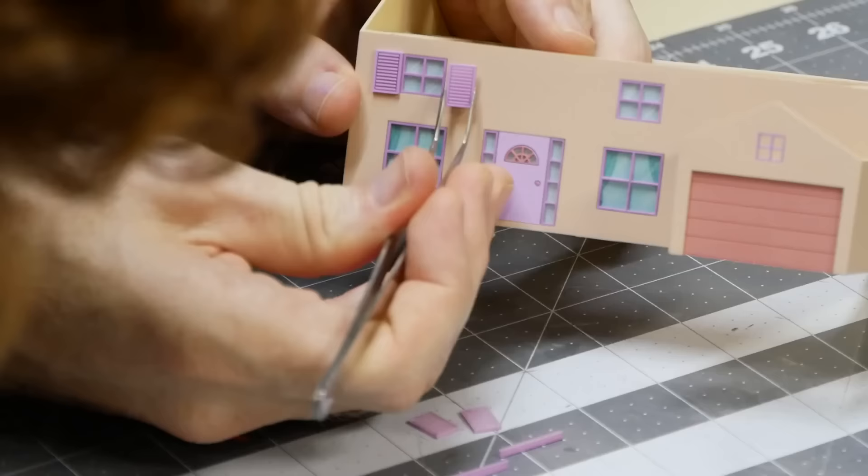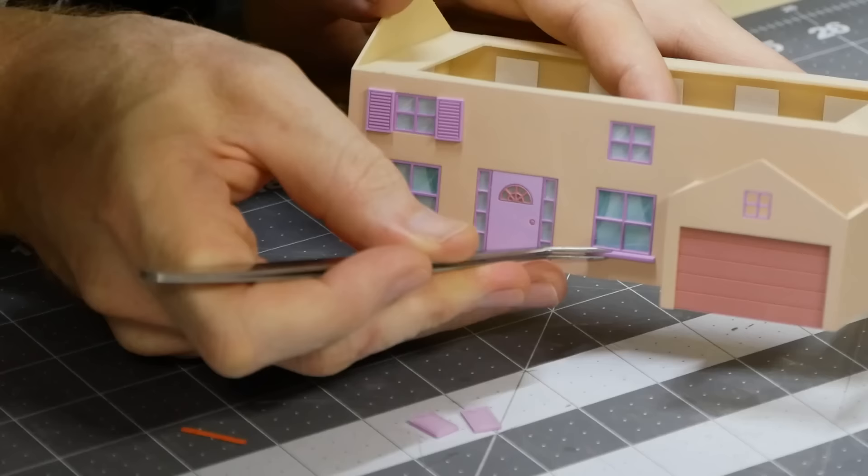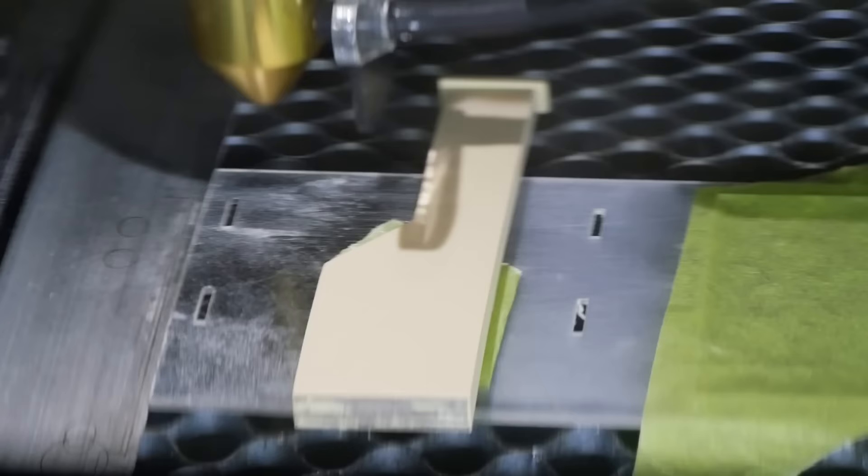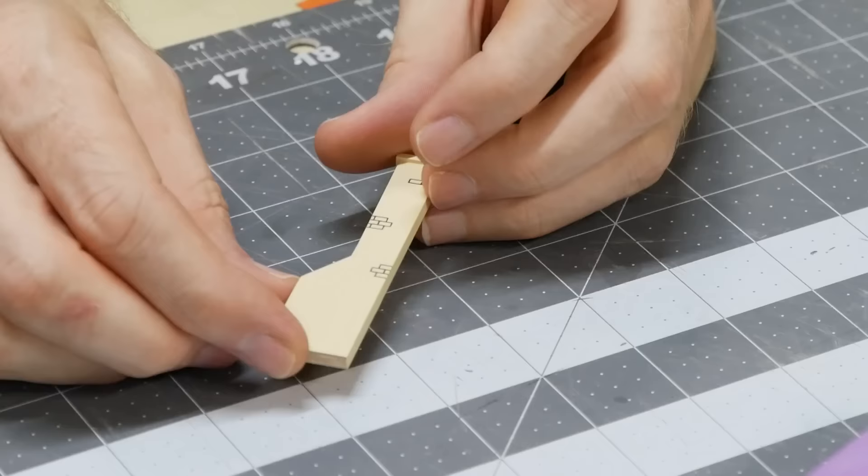Other details like the window shutters and window seals are added now as well. Some brick detail is added to the chimney using the laser cutter. This could of course have been done initially when the chimney was laser cut the first time, but it also works doing it now as well.